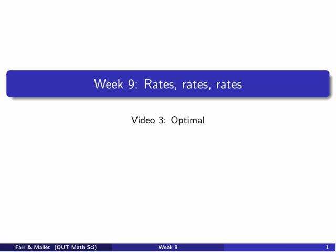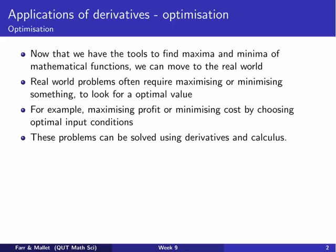Now we can find critical points of functions and classify them as maxima or minima. We can move on to using this knowledge for real-world problems that come up in optimisation. Real-world problems often require maximising or minimising something — looking for an optimal value. For example, you might be maximising profits or minimising costs by choosing an optimal input. These problems can be solved using derivatives and calculus.